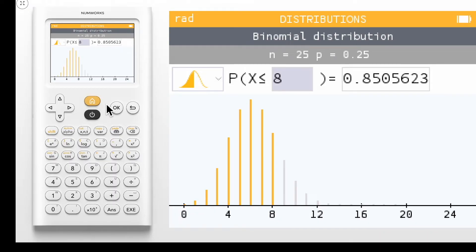We see that the probability that x is less than or equal to 8 is 0.8506 and the appropriate area has been shaded within the binomial distribution. We can change the probability statement by navigating to the icon in the top left corner and clicking OK.